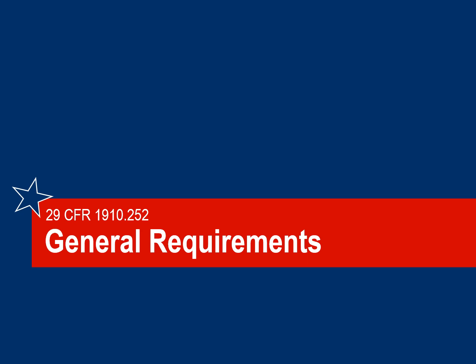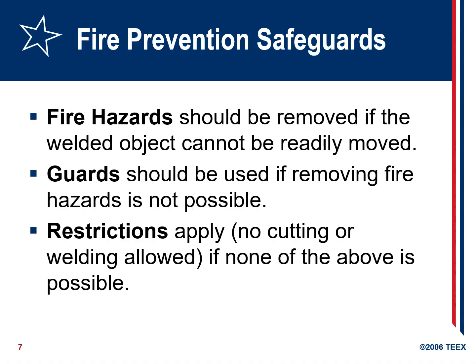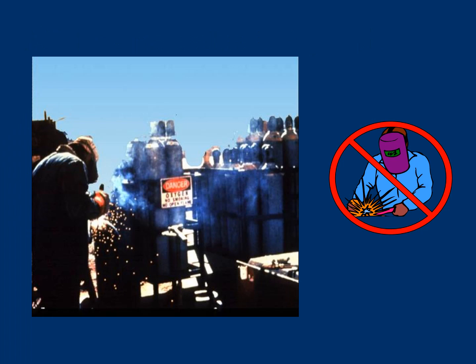The general requirements under 29 CFR 1910 state that fire hazards should be removed if possible. If the welded object cannot be readily removed, guards should be used. If removing the fire hazard is not possible, restrictions apply — no cutting or welding is allowed. An example of a hazardous environment with high risk of fire is shown in the picture.